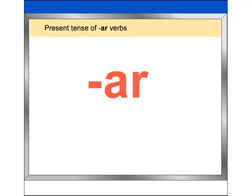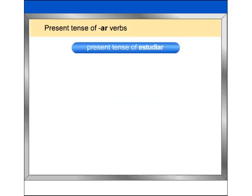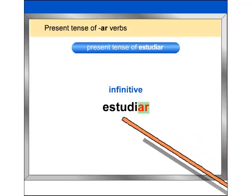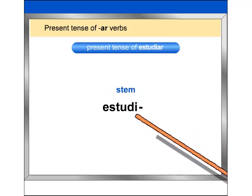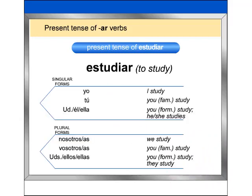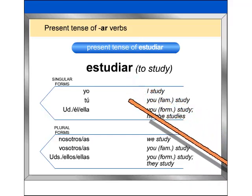Today you will learn about AR verbs. Let's look once again at estudiar. To create regular verb forms in Spanish, you start with the infinitive. Drop the infinitive ending — in this case, AR — to get the verb's stem. To the stem, you add the AR verb endings that correspond to the different subject pronouns.